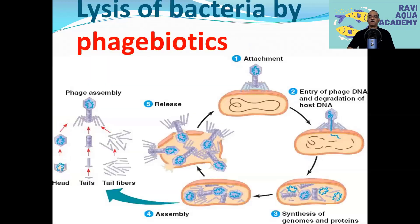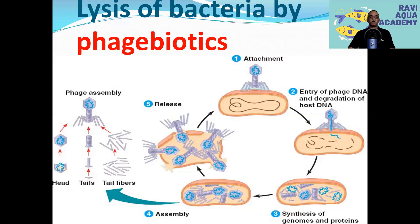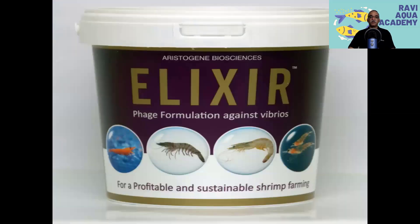This slide explains how phage biotics work. These phage biotics attach to Vibrio species and send their DNA inside the Vibrio cell. New viral particles synthesize inside the Vibrio cell, and after rupture of the cell wall, new phages come out and attach to other Vibrio species, killing them. They are very specific. We are soon going to have a video by Dr. Subhashni, a scientist producing phage biotics in India who has done a lot of research on this. The commercial product available in the market is Elixir, which most farmers are already using.